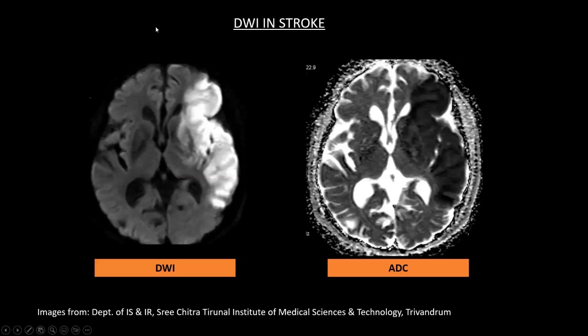Coming to the clinical applications, let's see an example of diffusion-weighted imaging in ischemic stroke. Here, a large area of MCA territory is affected. We can see the bright area here. ADC, or the apparent diffusion coefficient, is used to confirm the diffusion restriction, meaning DWI should be bright and ADC should be dark. Then we can say that this is a diffusion restriction. In this case, it is clear that there is diffusion restriction along the MCA territory.